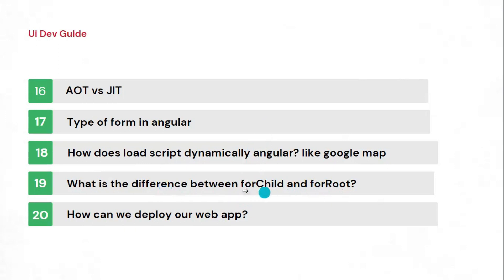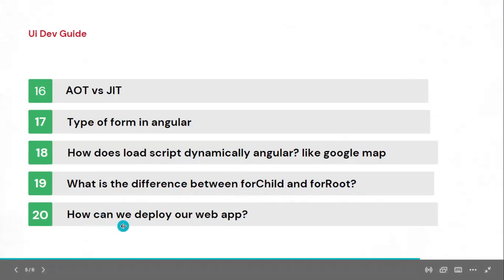The next question is: what is the difference between forRoot and forChild? This relates to NgModule routing. When creating routing at the app/src level, we use forRoot. When creating nested routing with NgModule — for example when you have created two modules — they will automatically use forChild. We have one root and inside that we have children. That is the difference, and there may be counter questions as well.